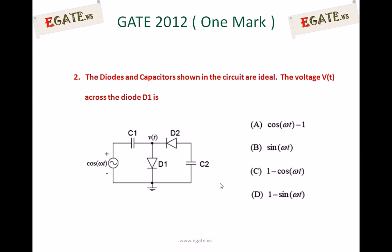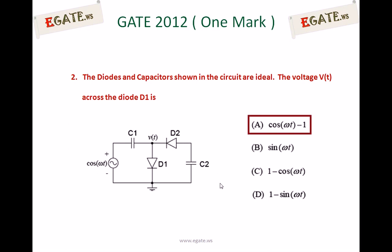Look at the circuit. The input signal is cos(ωt) and there are two ideal diodes and two capacitors connected as shown. V(t) is the voltage across diode D1. For diode D1, the P-side is the positive terminal and the N-side is the negative terminal for the voltage V(t). The right answer for this question is A: cos(ωt) − 1.